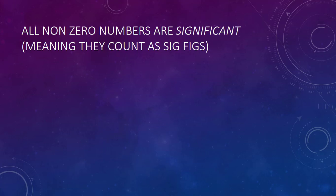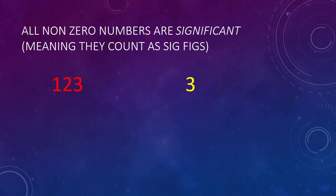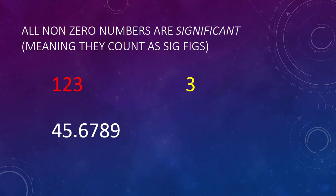Rule number one: all non-zero numbers are significant. So the number 123 has three non-zero numbers, which means they are all significant, so the number of significant figures is three. The number 45.6789 has six non-zero numbers, which are again all significant, so it has six significant figures.